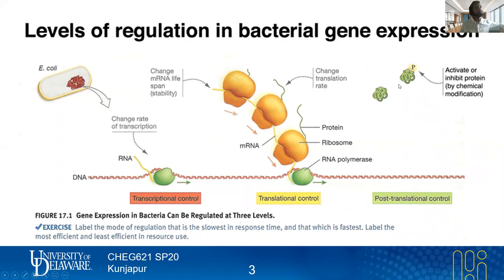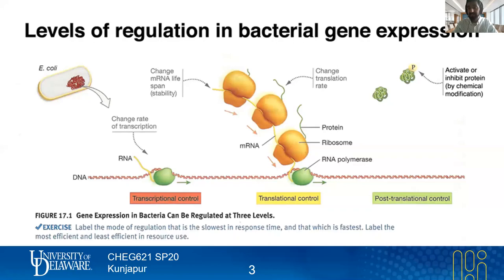This image from a textbook has an exercise to label the mode of regulation that is the slowest in response time and that which is fastest. When you think about it, if you have to go through the stages of transcription and translation to change how much enzyme is active, that adds a lot of time — just extra steps to making an adjustment. And if you're a unicellular bacterium, you've probably evolved some mechanisms to respond to things really quickly in order to survive.